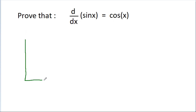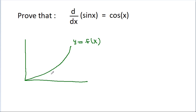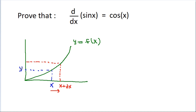So this is the x and y-axis, and if we have any graph y is equal to f, then at any point x, the value of y will be y. Now if we increase x by some dx, then x will become x plus dx, and y will also increase by some dy, becoming y plus dy.